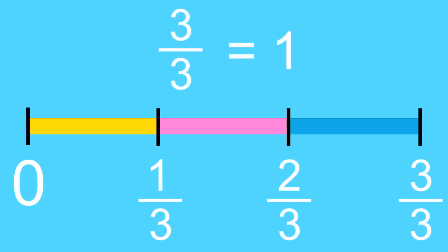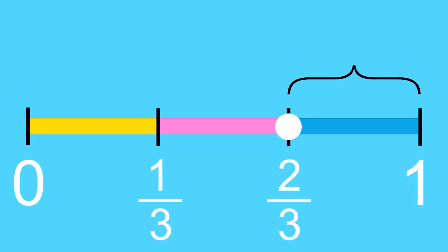These are thirds. Now let's count 0, 1 third, 2 thirds, 1. Or we could say 3 thirds. 3 thirds and 1 are the same number. So, to show 2 thirds on a number line, we put a dot right here. Notice that it's closer to 1 than it is to 0.